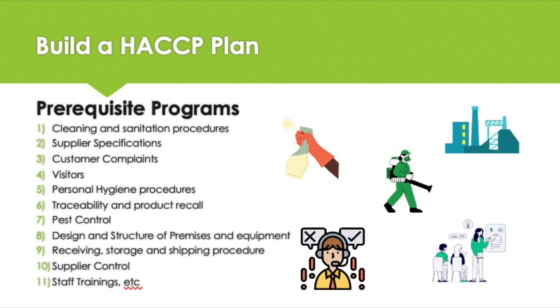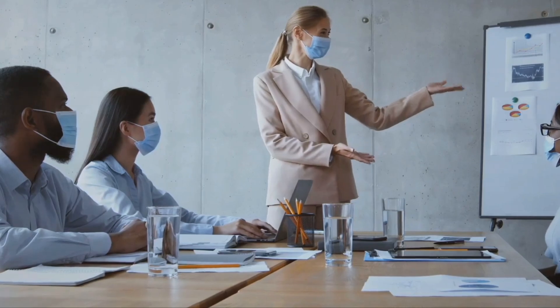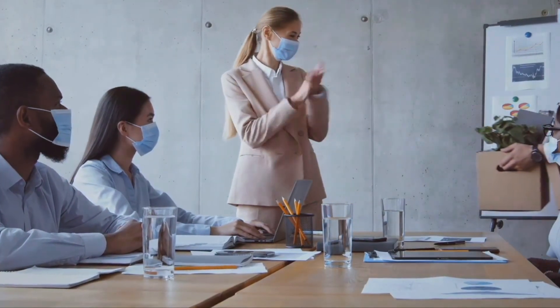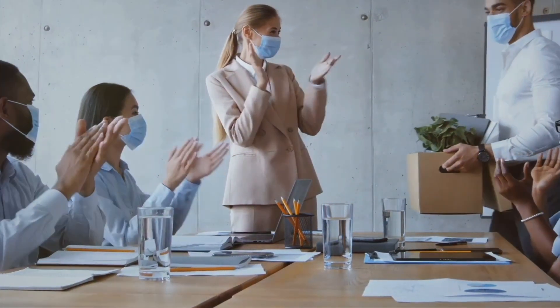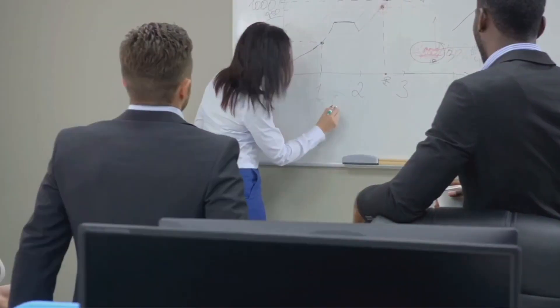The HACCP plans are prepared for each product or process and identify possible hazards and controls in place to make sure the hazards are prevented, eliminated, or controlled to ensure acceptable levels in the food product.